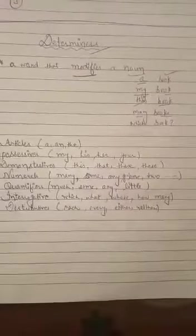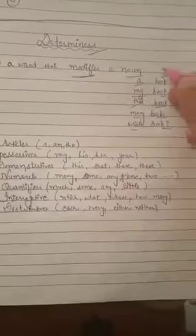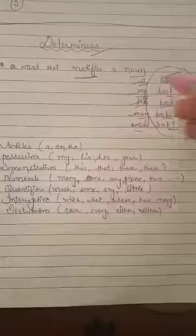And if I write 'many books' it means I'm telling the quantity of books. And if I write 'which book' it means I'm asking a question related to book. So here book is a noun and the words which are used before noun are changing its meaning, they are modifying the noun.